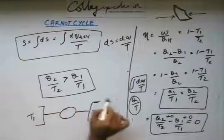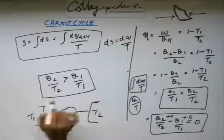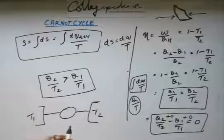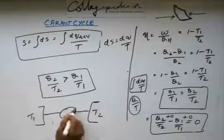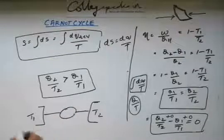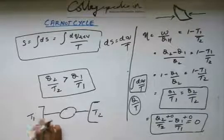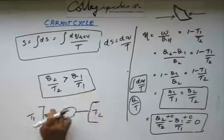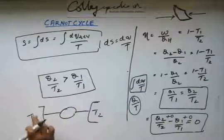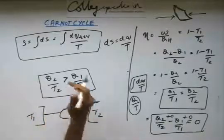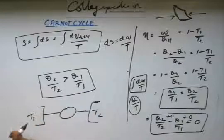If you look at the whole thing as a system then T1 lost some energy, lost some heat gave it to this engine. The heat lost by this T1 is equal to Q1 by T1. So the entropy lost is equal to Q1 by T1.